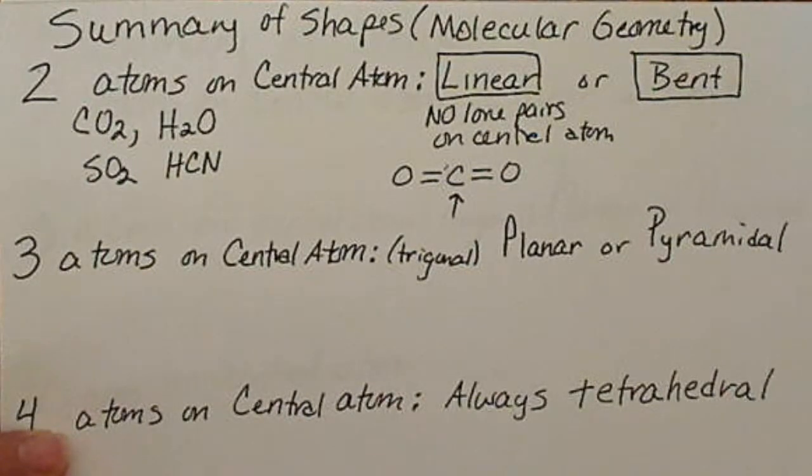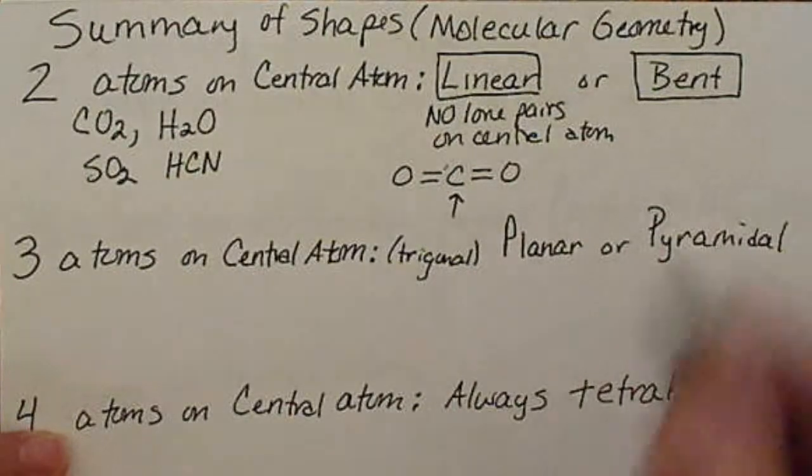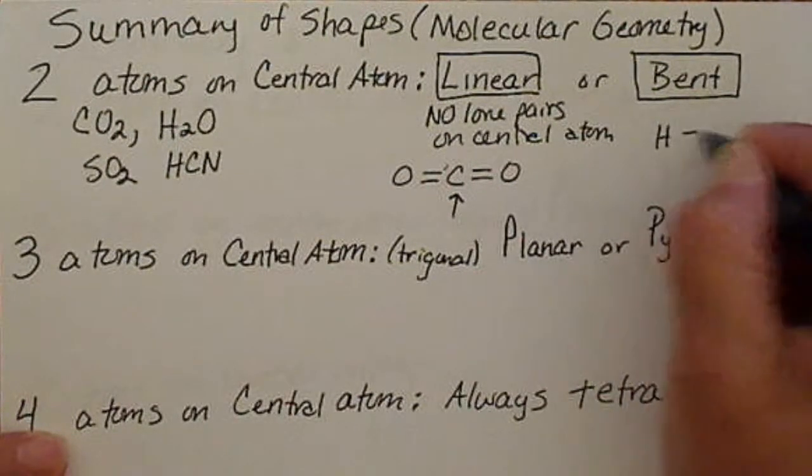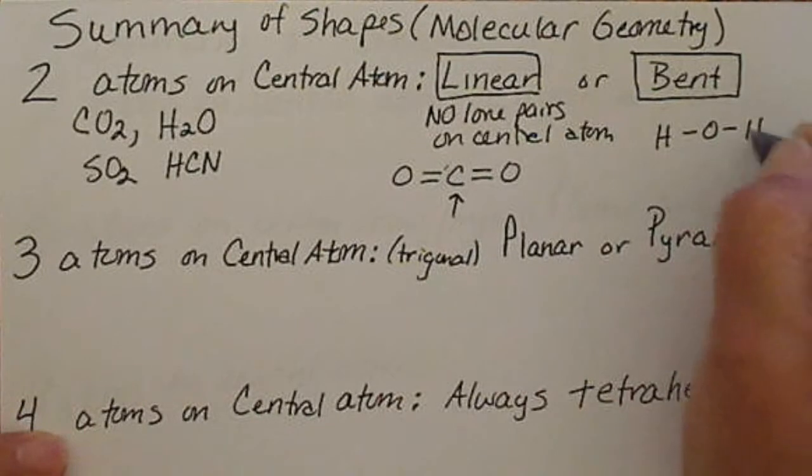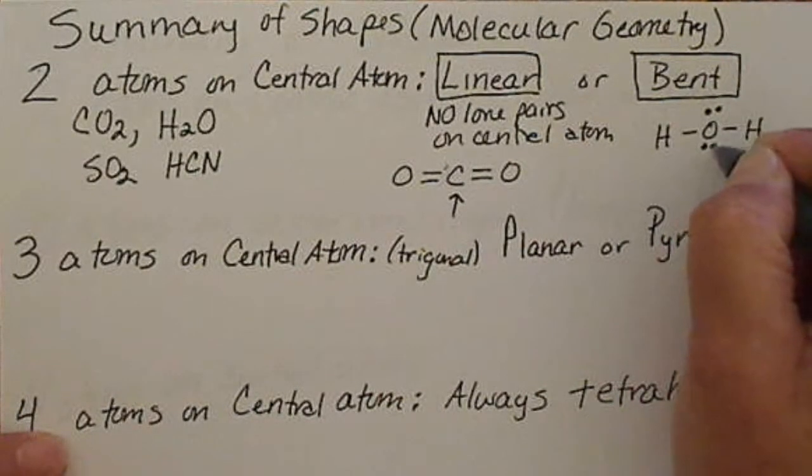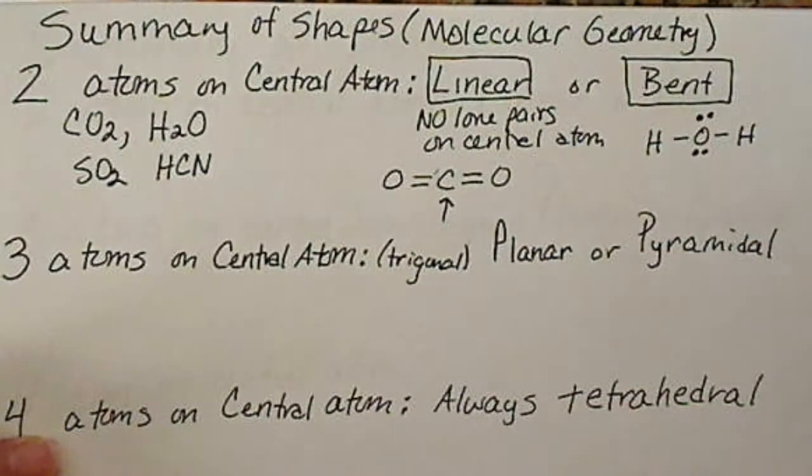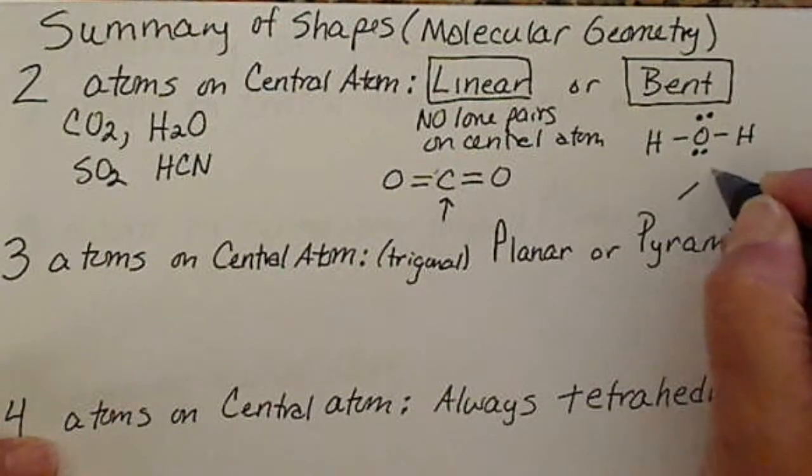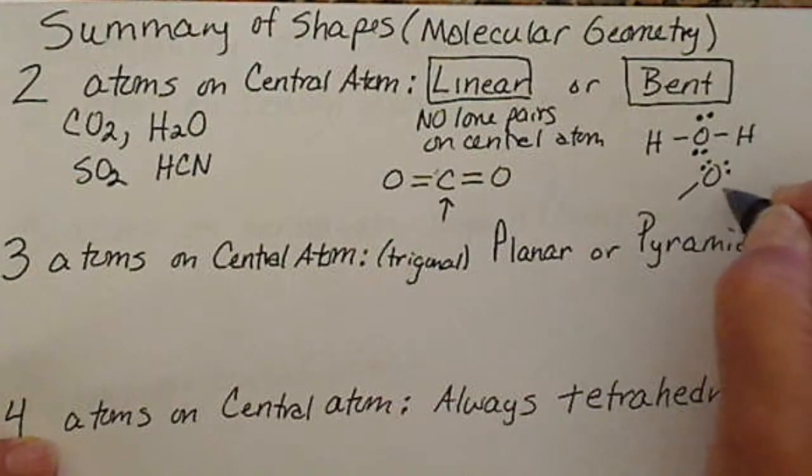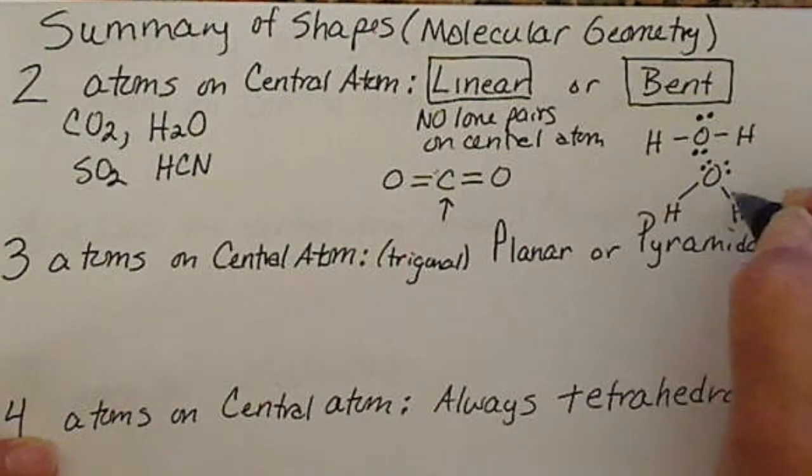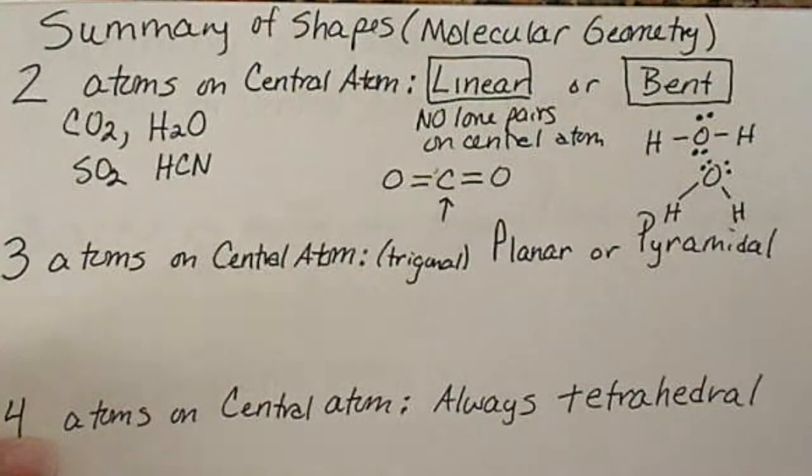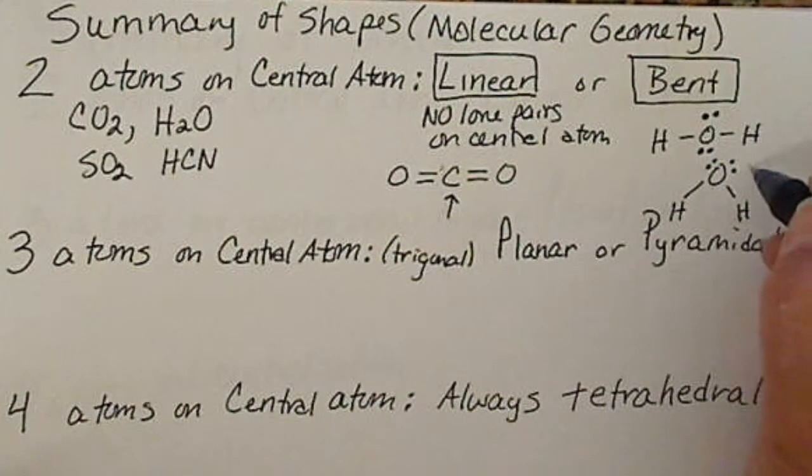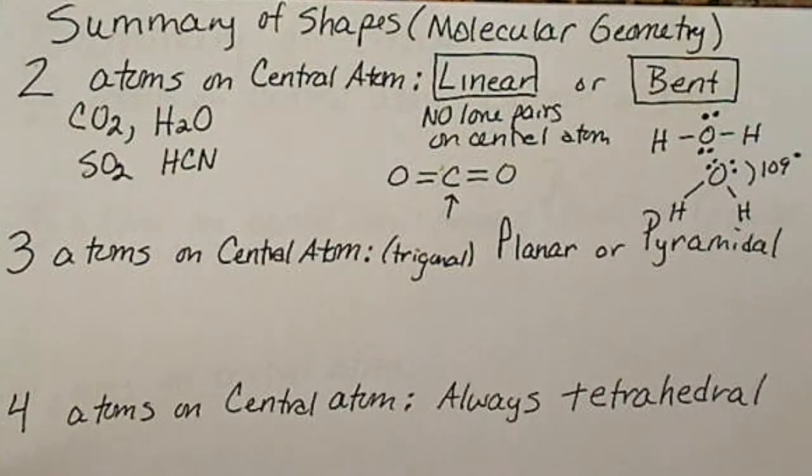If we draw water, we'll have a drawing that looks linear, but we'll have lone pairs on the central atom. Those lone pairs are not directly above and below; they assume that tetrahedral arrangement to maximize their angle between them. So water would actually be bent. The lone pairs are going to cause these electrons to move away from each other. This is that 109 degree angle, which we don't need to know.